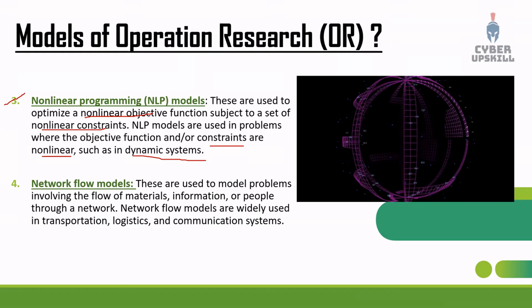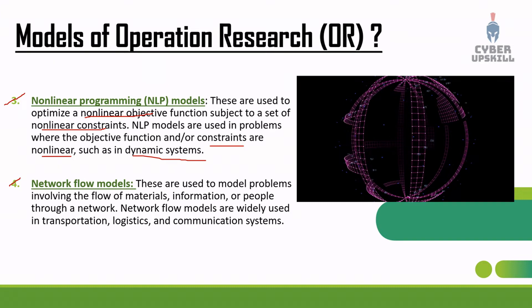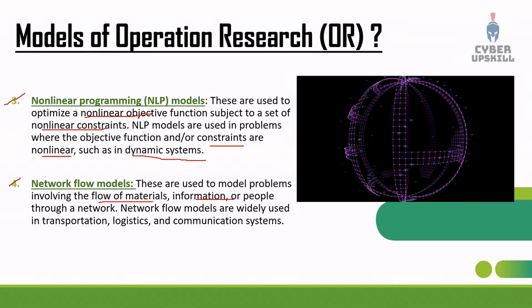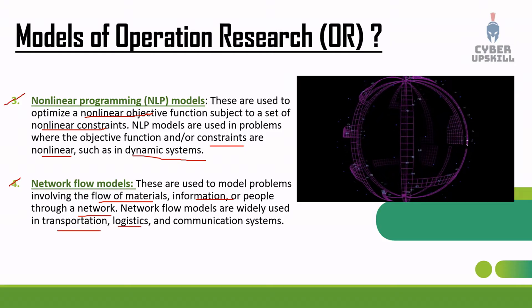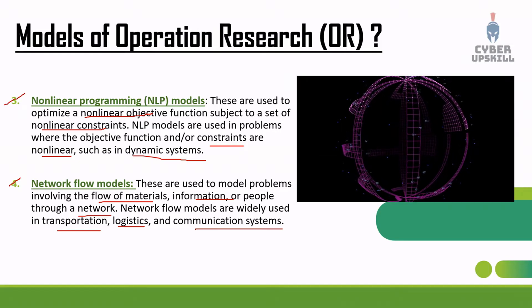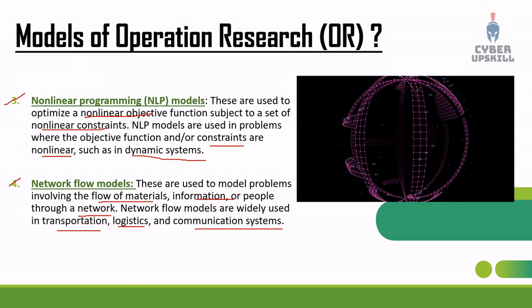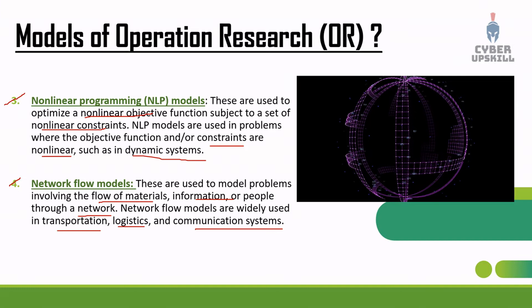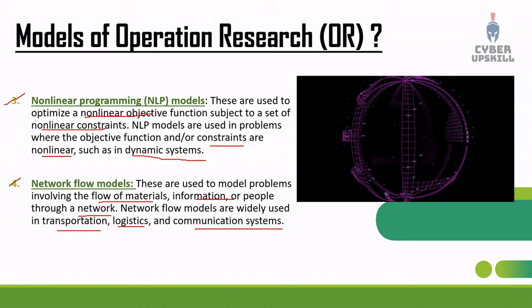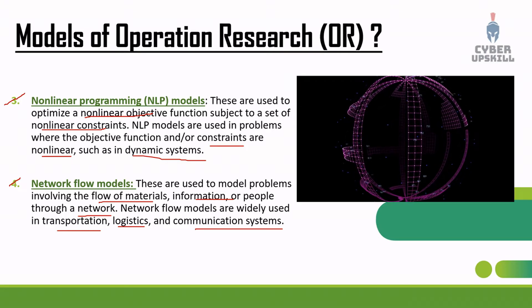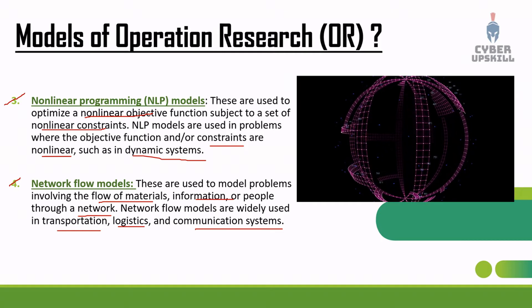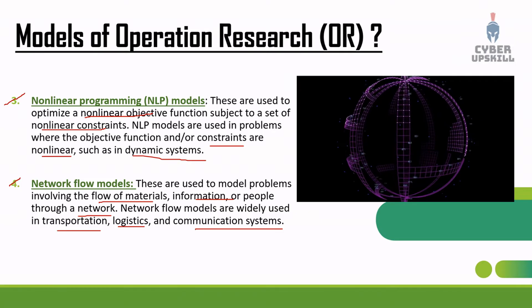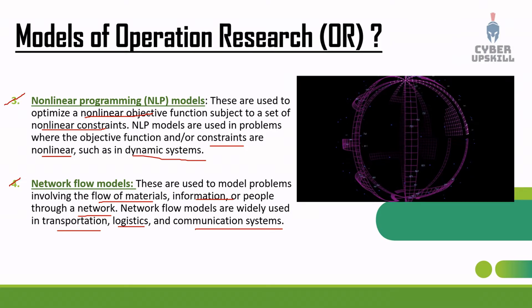Network flow models are used to model problems involving the flow of materials, information, or people through a network. They are widely used in transportation, logistics, and communication systems. For example, if we have a parcel in Delhi going to Chennai, it flows through the Delhi airport to the Chennai hub — this is a network flow model.